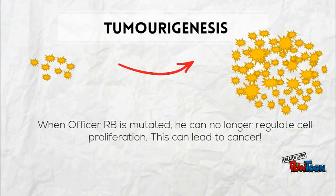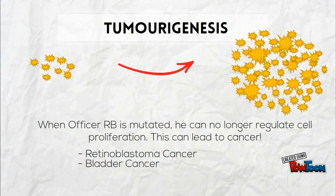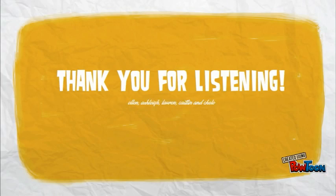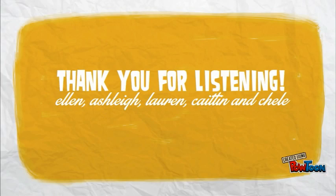Mutations in the RB gene are known to cause retinoblastoma cancer, which develops in the retina of the eye and is typically found in children. Other cancers linked to the RB gene include bladder, lung, breast, and bone cancers. Thank you for listening.